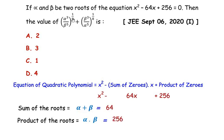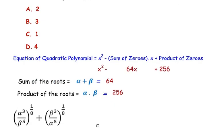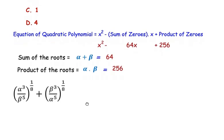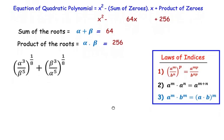Now let us come back to the given expression. We have (α³/β⁵)^(1/8) + (β³/α⁵)^(1/8). To solve this, we are going to make use of some laws of indices.